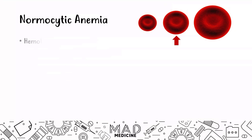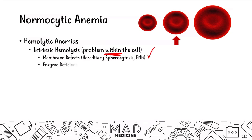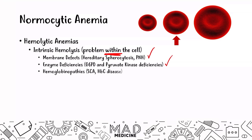When it comes to hemolytic anemias, the intrinsic causes occur due to problems within the cell. These can be issues with the membranes, enzyme deficiencies — we've discussed all of these in previous videos, you can check them out on the playlist — and they can be due to hemoglobinopathies like hemoglobin C disease, and that's what we're going to be discussing today.